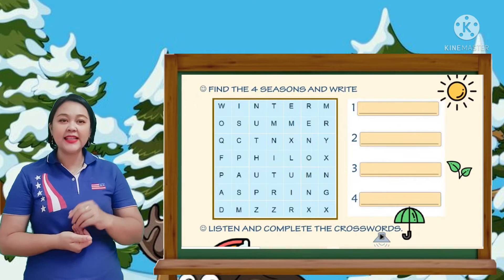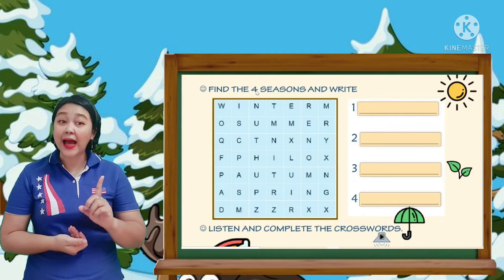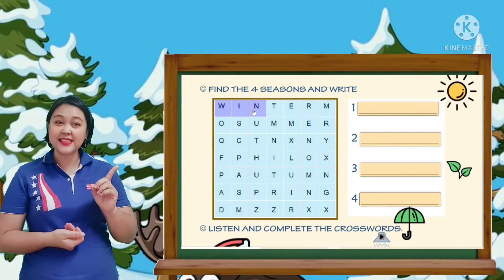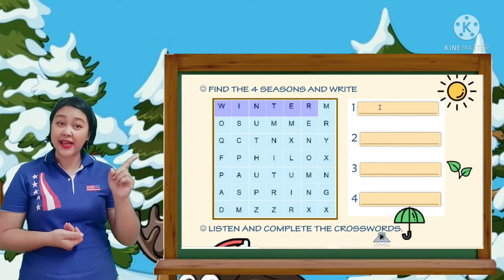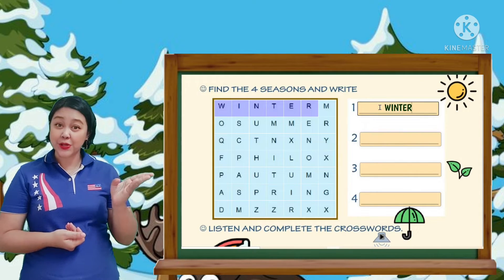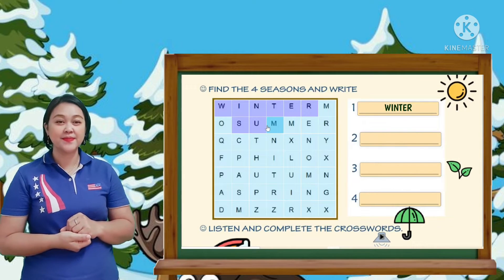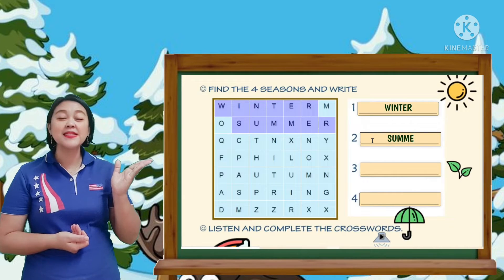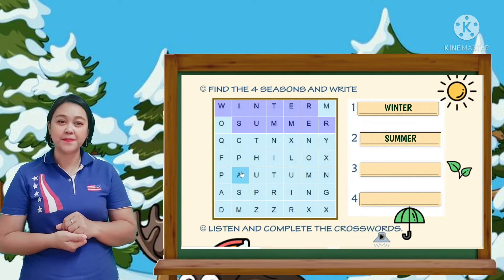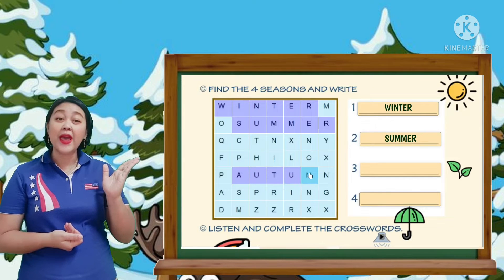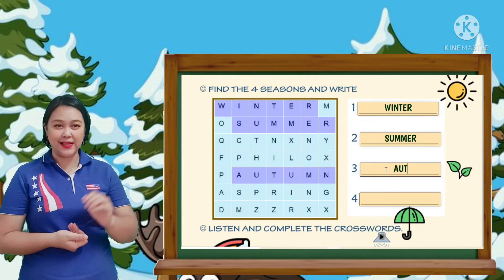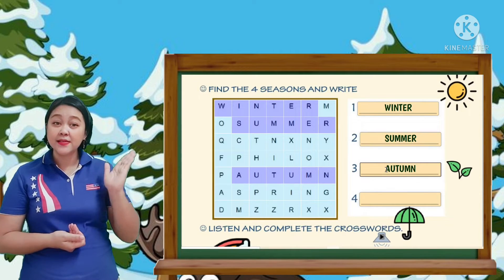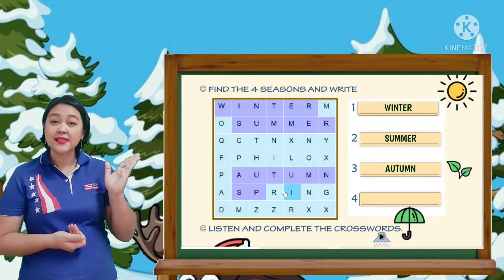Next, find the four seasons and rhyme. You will find the letters and write them. Number one — you write winter. Number two — we have summer. Number three — we have autumn or fall.